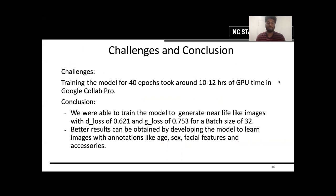We faced a number of challenges during implementing this project. One of the main challenges was running the project on Google Colab. When the dataset contained 100,000 images, the model took a very long time to train. That made us decide on a dataset of 60,000 images, which trained for 40 epochs in 10 to 12 hours in Google Colab. In conclusion, we were able to train the model to generate near-lifelike images with a discriminator loss of 0.621 and a generator loss of 0.753 when the batch size was 32.